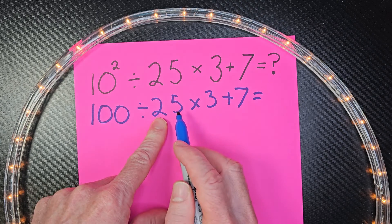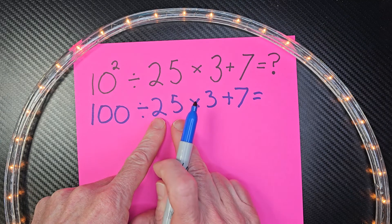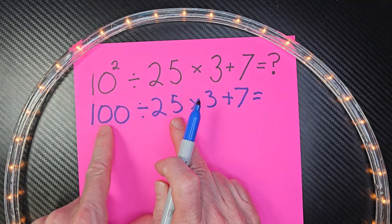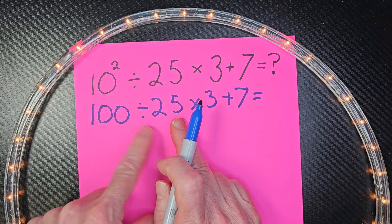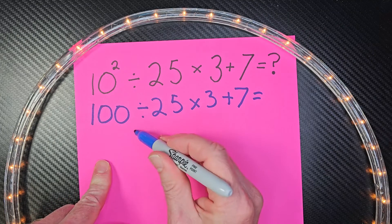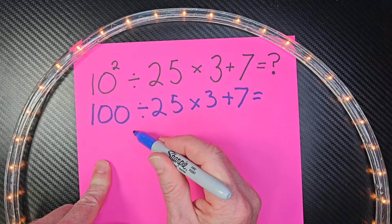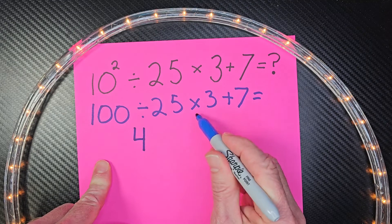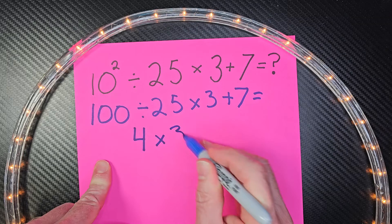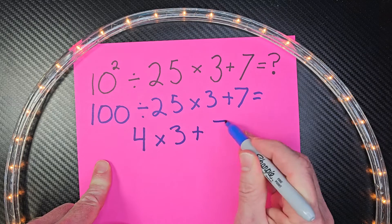Another way to look at it: in the United States, we have a coin that's worth 25 cents, and this would be the dollar. So 100 divided by 25 would be 4, then times 3 plus 7.